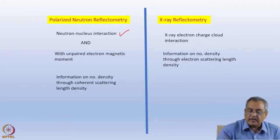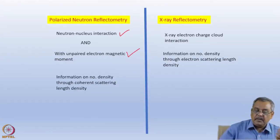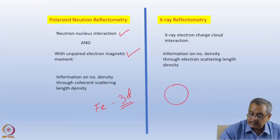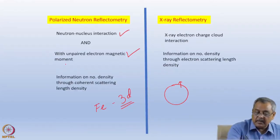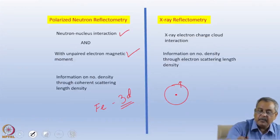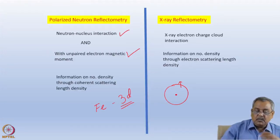Let me take a simple example — iron. It is a 3d-group magnetic material, so every iron atom has an unfilled shell giving rise to its magnetic moment. The neutron can interact with the nucleus through the coherent scattering length b-coherent, and it also interacts with the unpaired electrons. So we get information on number density through coherent scattering length density and also on magnetic moment density.